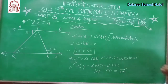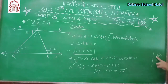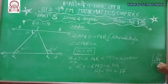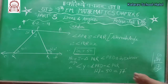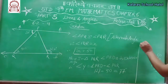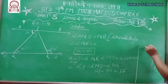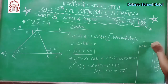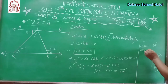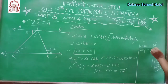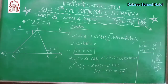So 127 minus 50 equals 77 degrees. You can verify: if you add 50 and 77, you get 127, which is correct. Therefore angle X equals 50 degrees and angle Y equals 77 degrees. This is the way to solve it.